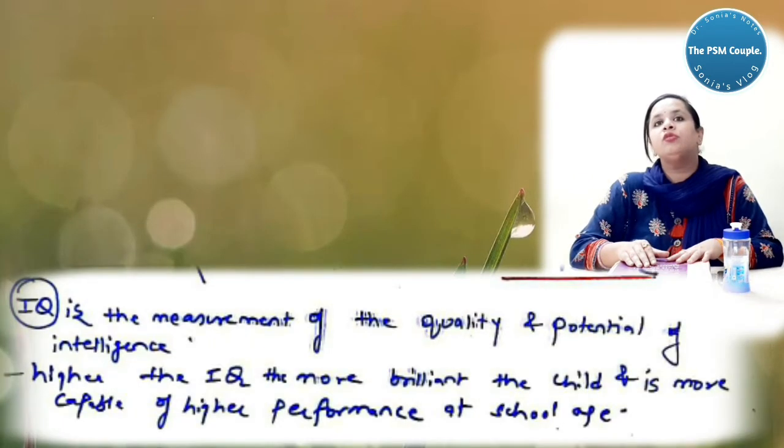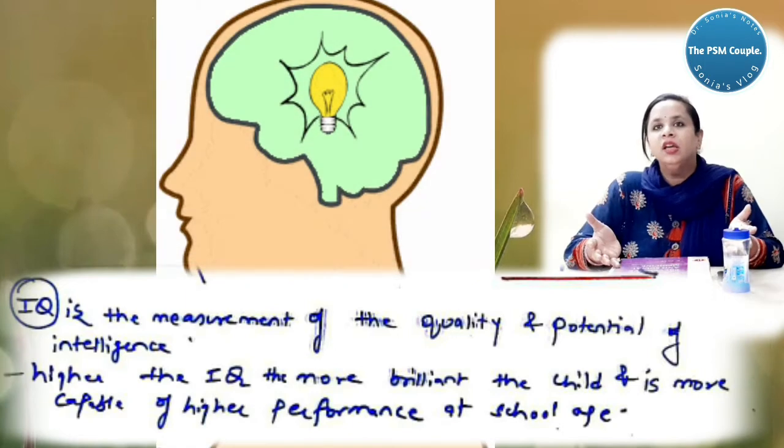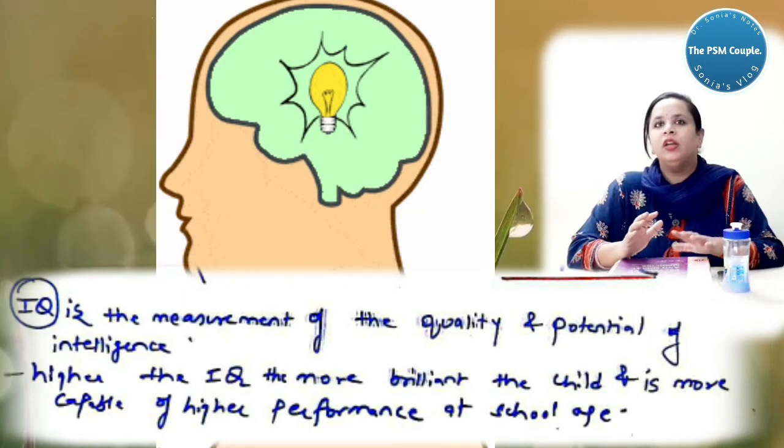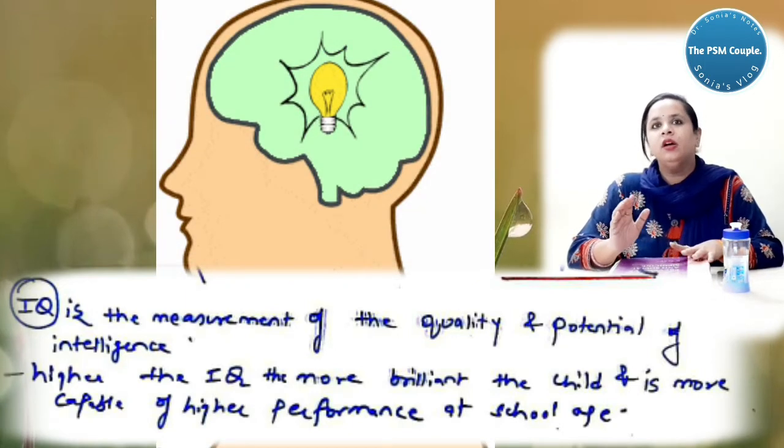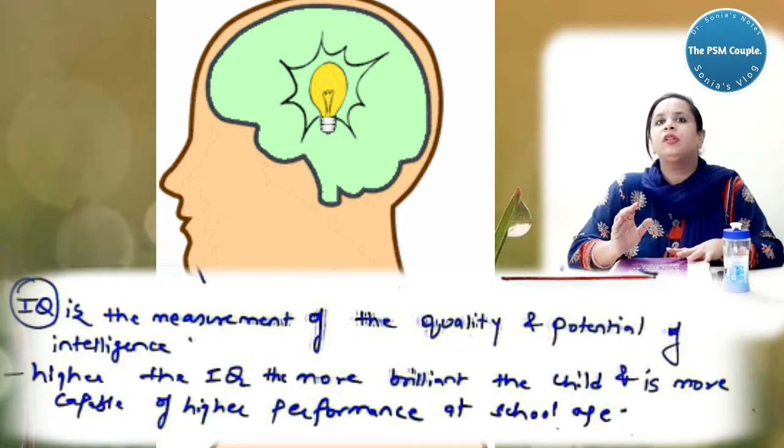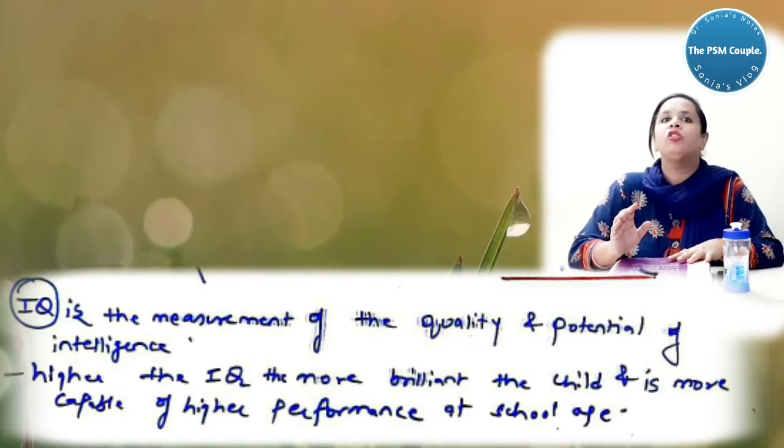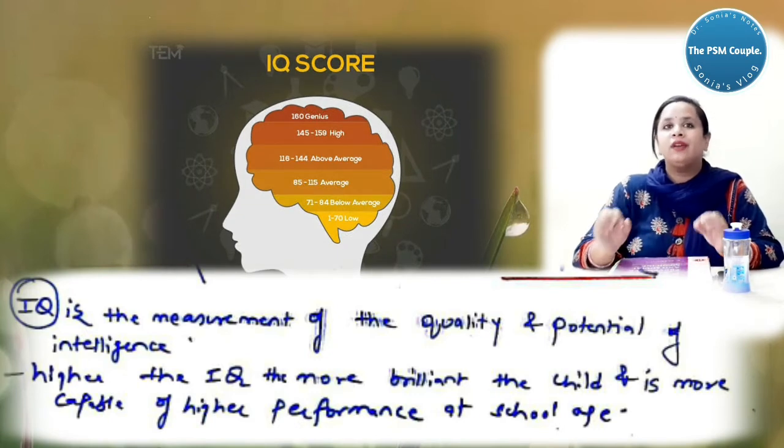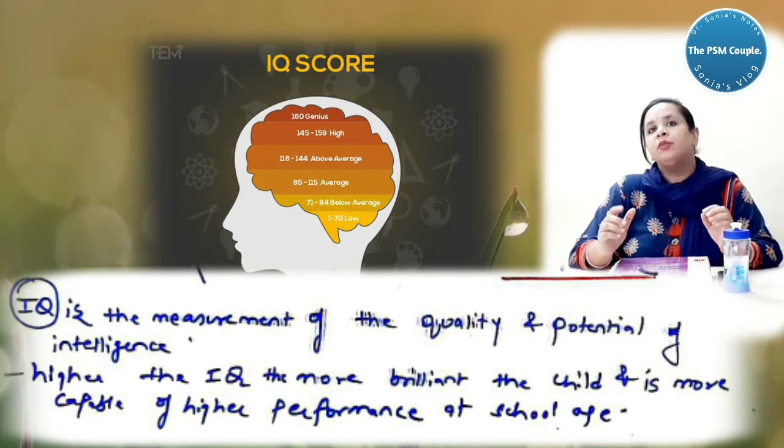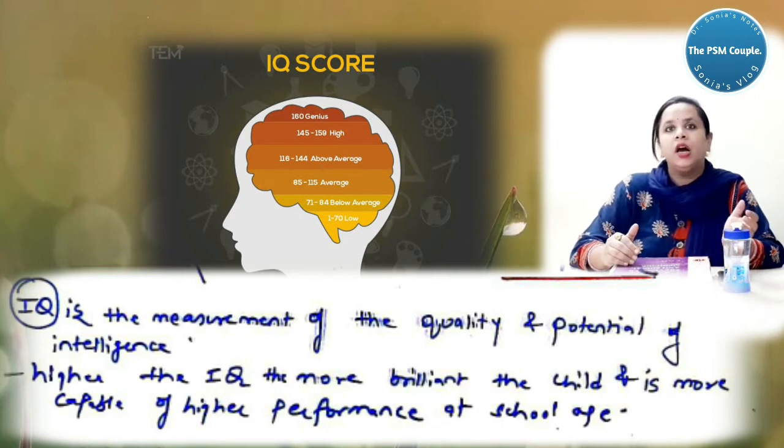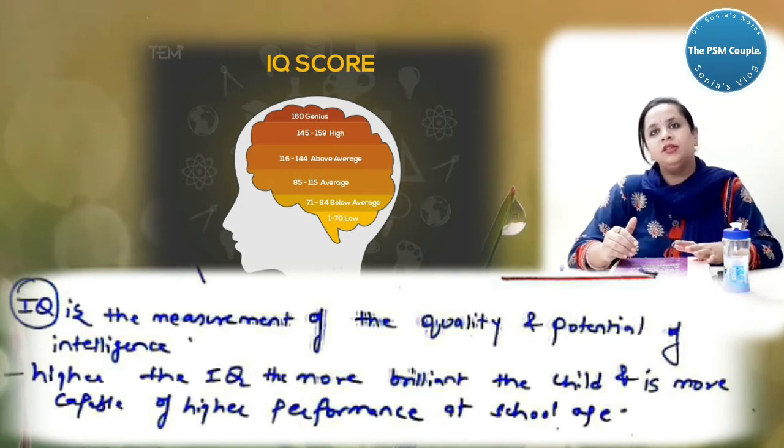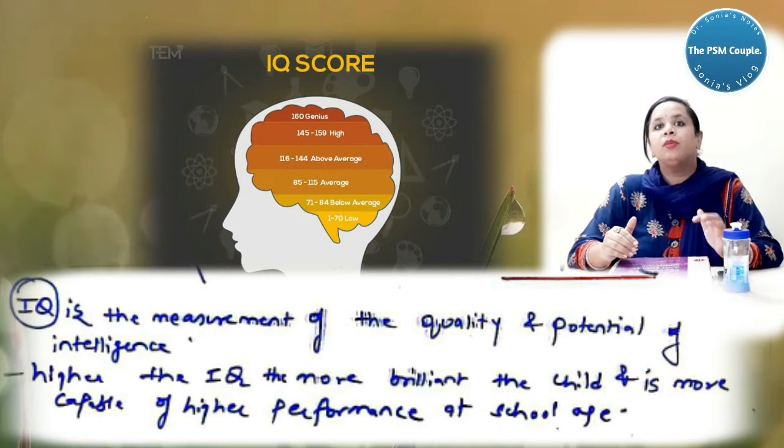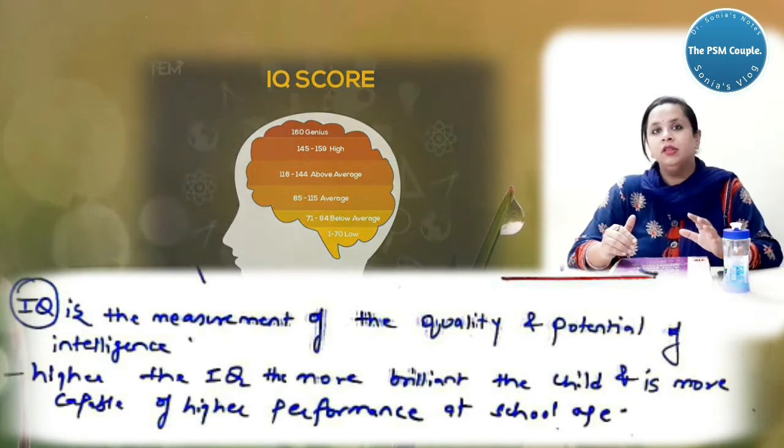Now what is the definition which they say about the IQ? IQ is the measurement of the quality and the potential of your intelligence. One is the formula, the mental age upon the chronological age into 100. But if you see in the language point of view, it is the measurement of quality and the potential of intelligence. Higher the IQ, the more brilliant the child and is more capable of higher performance at the school age.